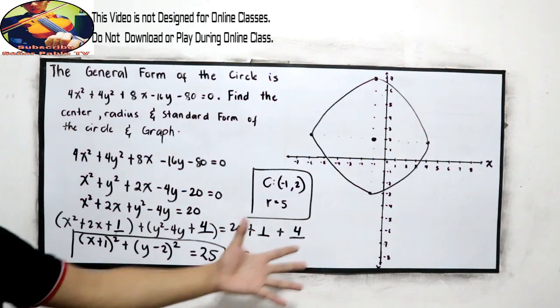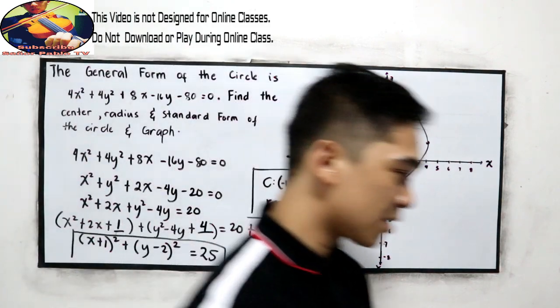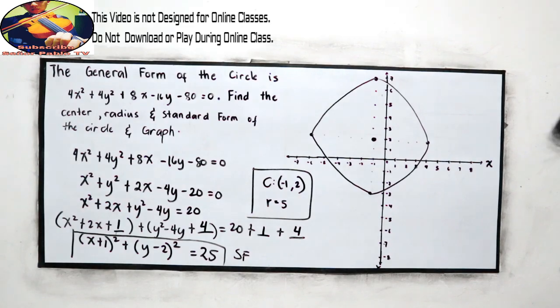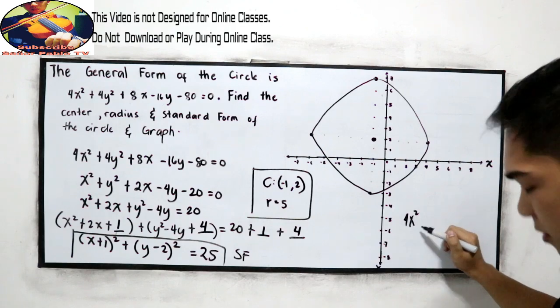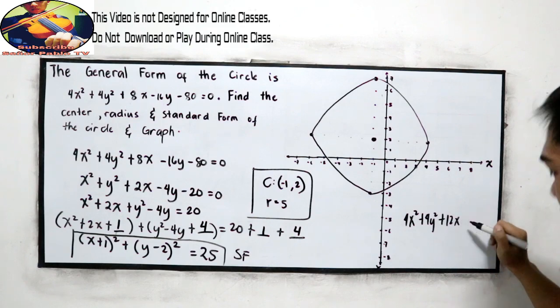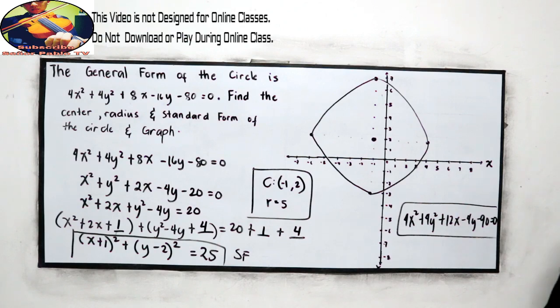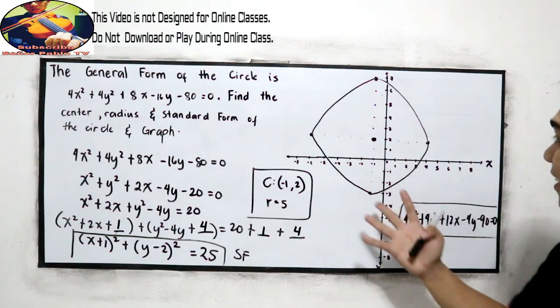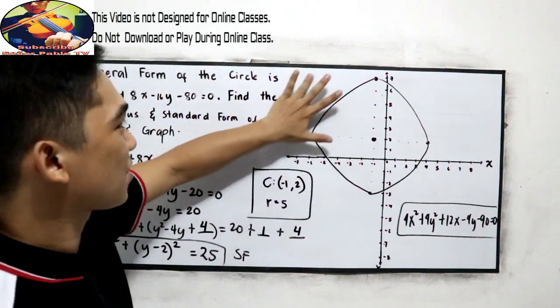That's how to graph the circle in our Cartesian plane. This ends our lesson. For your assignment, given the general form of 4x squared plus 4y squared plus 12x minus 4y minus 90 equals 0, find the center, radius, and the standard form of the circle and graph in your Cartesian plane. Assume that this is a perfect circle. It's hard to graph here because it's quite slippery.